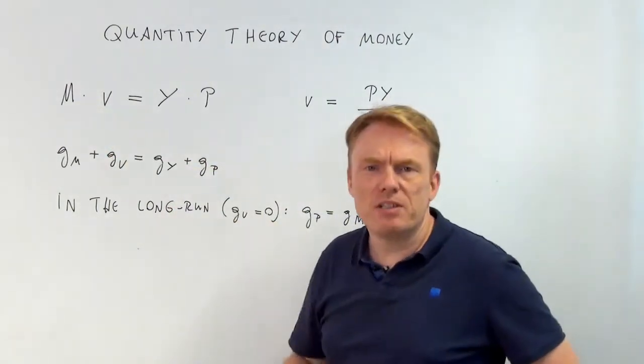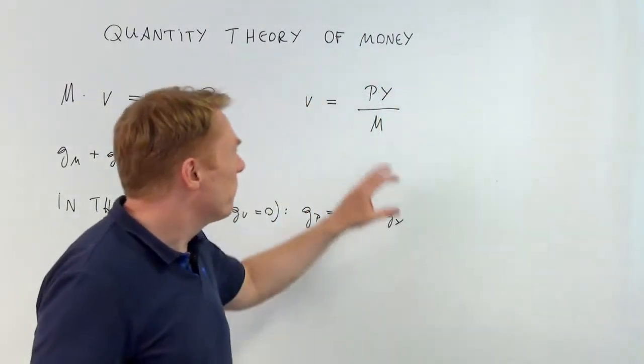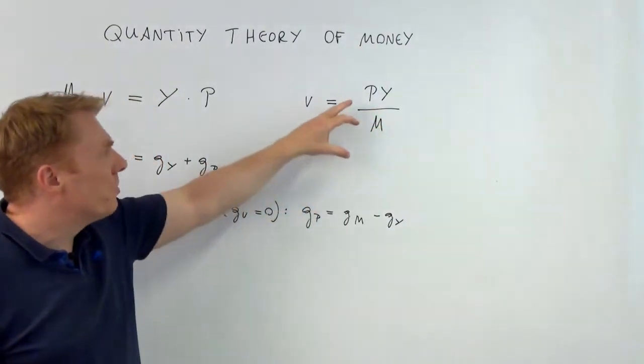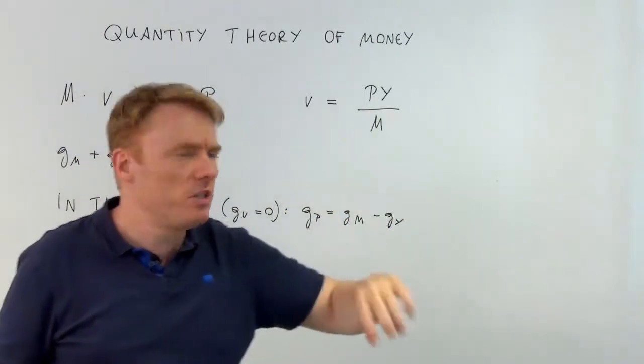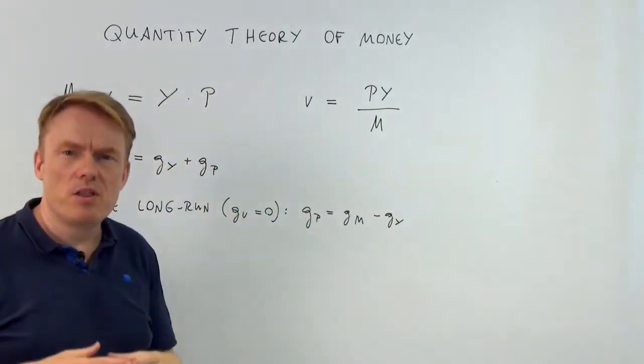So what is velocity of money? Velocity of money can be understood this way: P times Y, price level times real GDP, divided by the money supply.